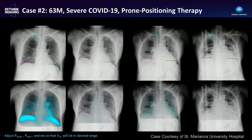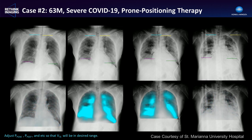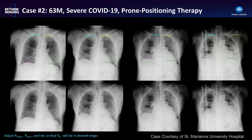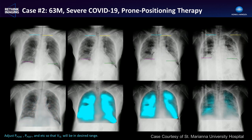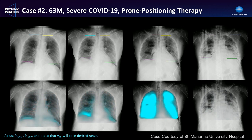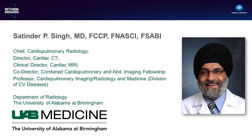Another case from St. Mariana University in Japan: a severe COVID patient who on day two underwent prone positioning therapy. The DDR ventilation images showed that ventilation was improving with this prone therapy, correlating with measurements from the ventilator. On the eighth day of the patient's course, lung ventilation started to decrease again. Dr. Singh will talk more about this. I look forward to hearing him share his experience and knowledge of how DDR can be used clinically.